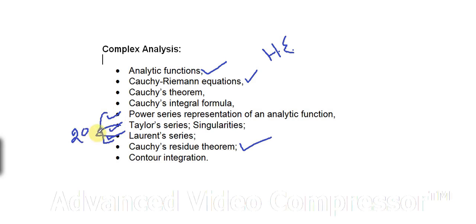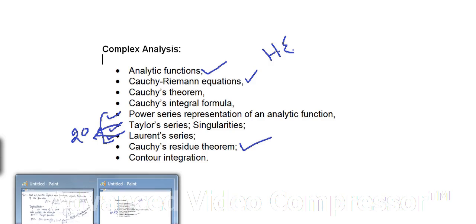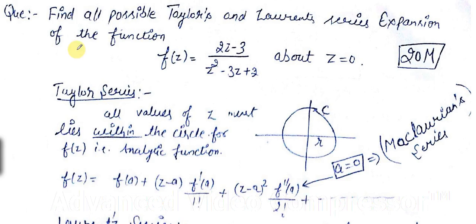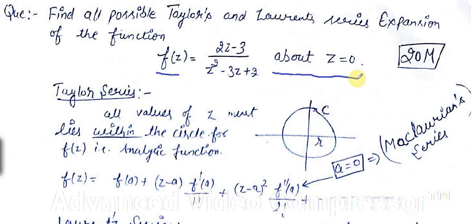We will be discussing that exam question and I will explain the concept behind Taylor series and Laurent series. The question is: find all possible Taylor and Laurent series expansions of the function f(z) = (2z − 3) / (z² − 3z + 2), about z = 0. This question carries 20 marks.